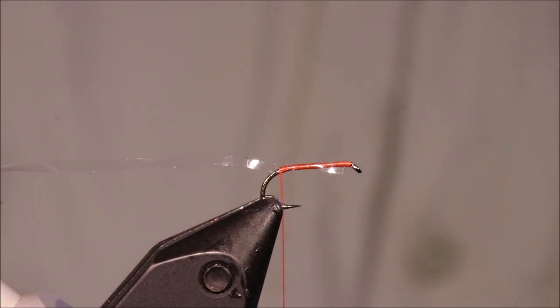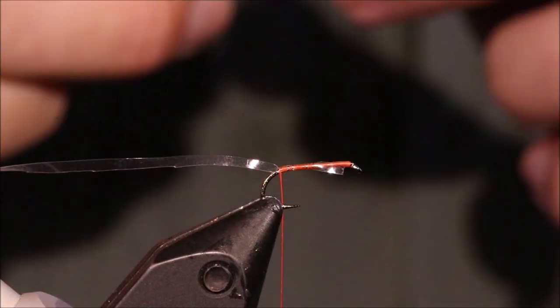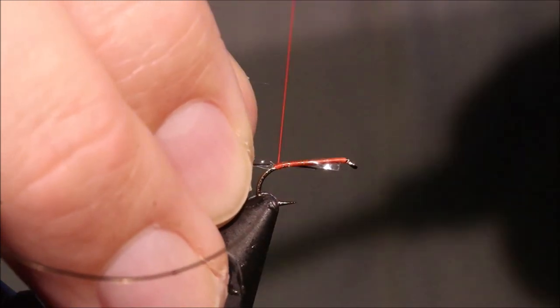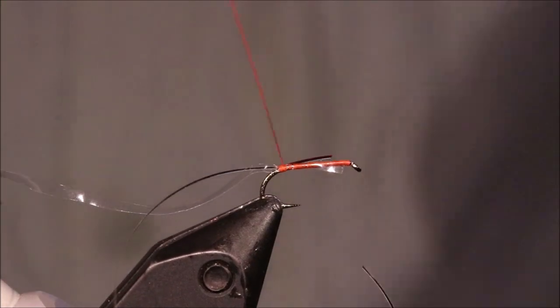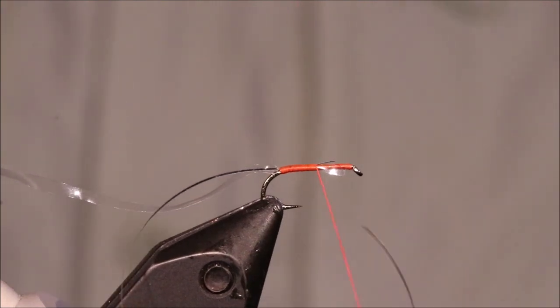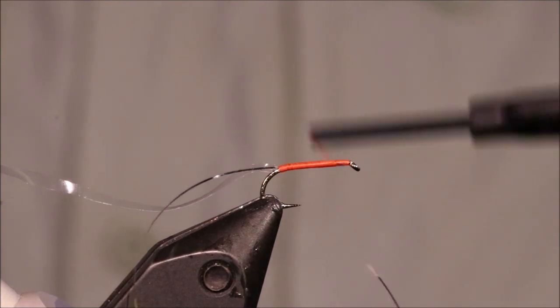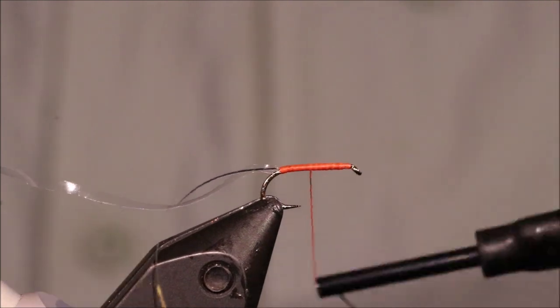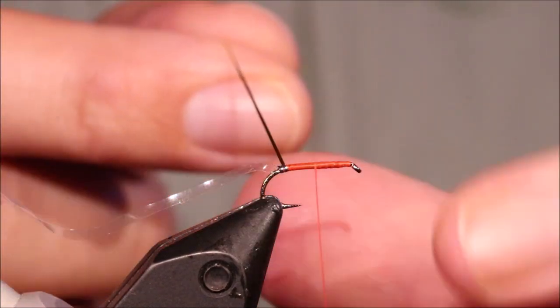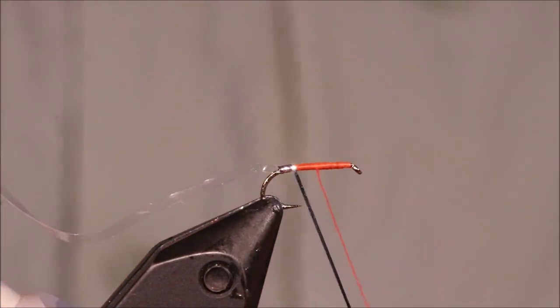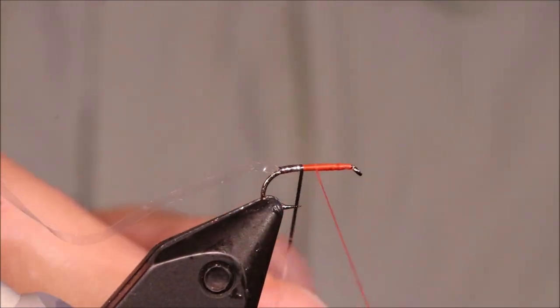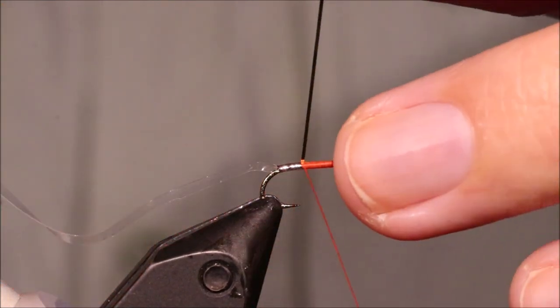Now I'm going to get some small silver tinsel. Just catch that in. Make sure the tag ends the length of the body so everything is nice and even. Then I'm just going to wind my thread forward, tidying everything up, creating a nice smooth underbody. Right. Then I'm going to come back so that I can catch this tinsel. I'm going to wind it forward and close to touching turns. I mean, don't overlap and don't worry if there's a wee bit of orange peeks through. That's perfectly fine. I'm going to come up to about the hook point and then tie that off.